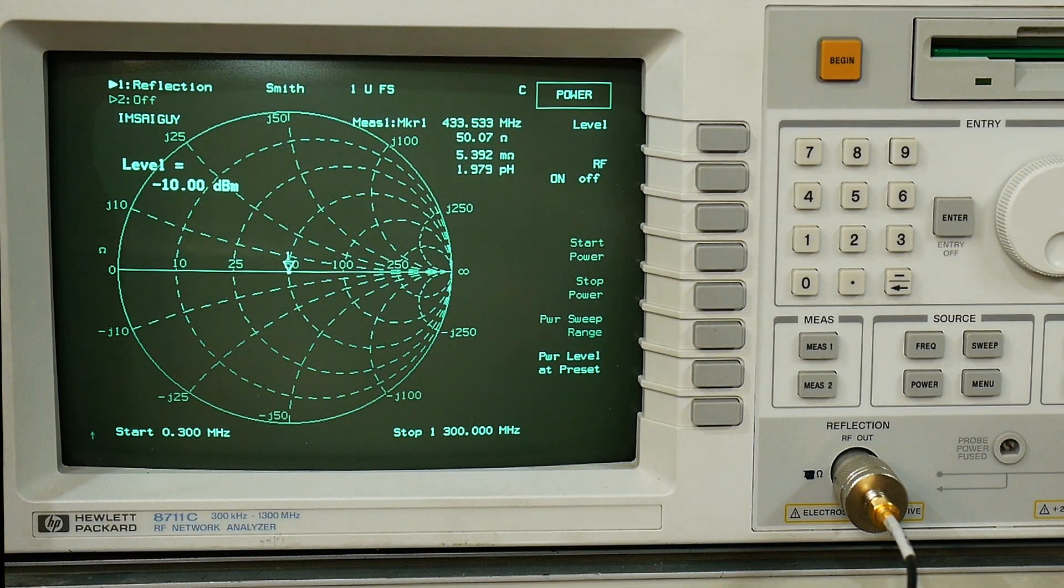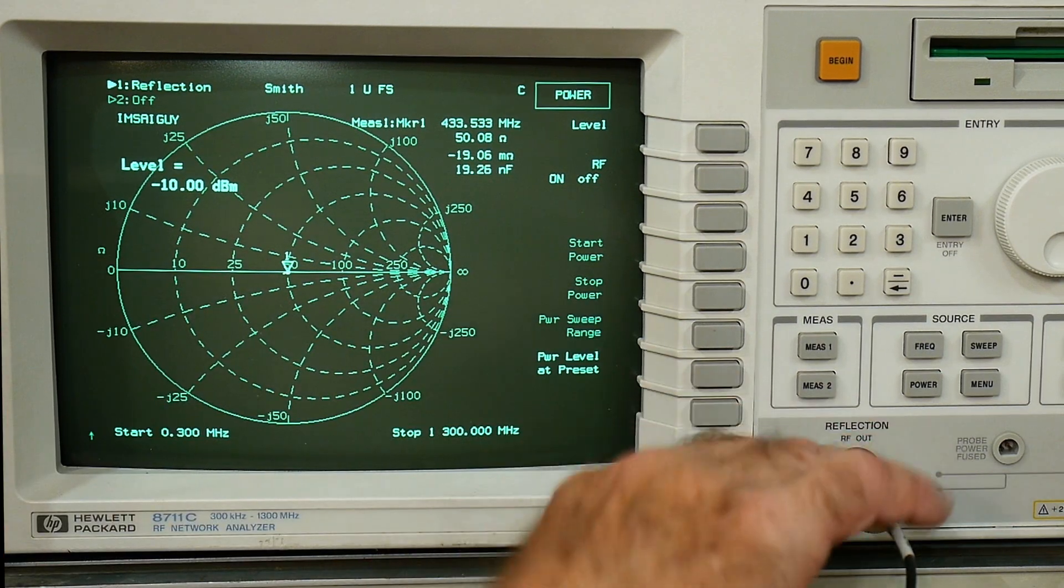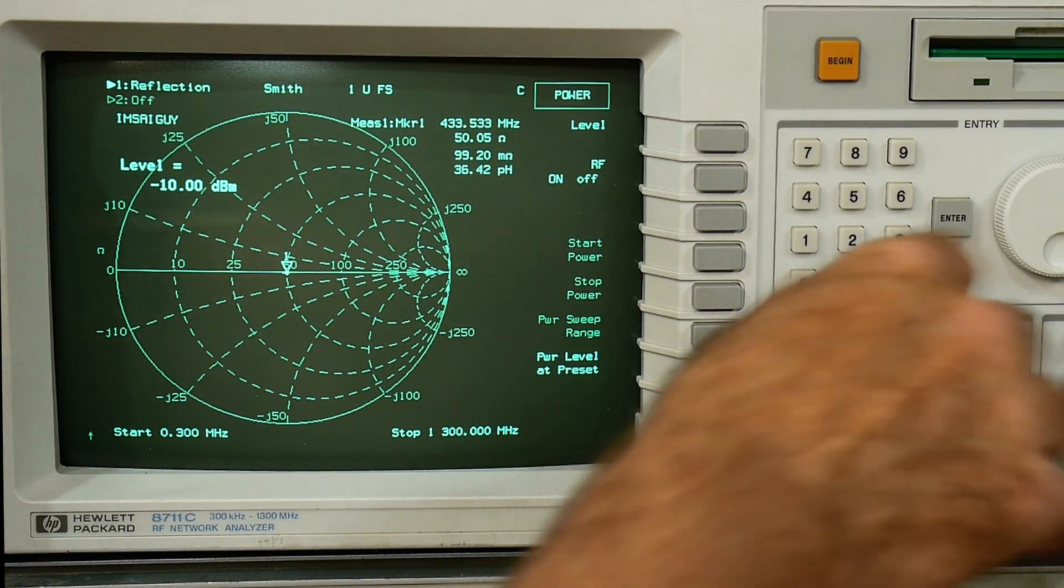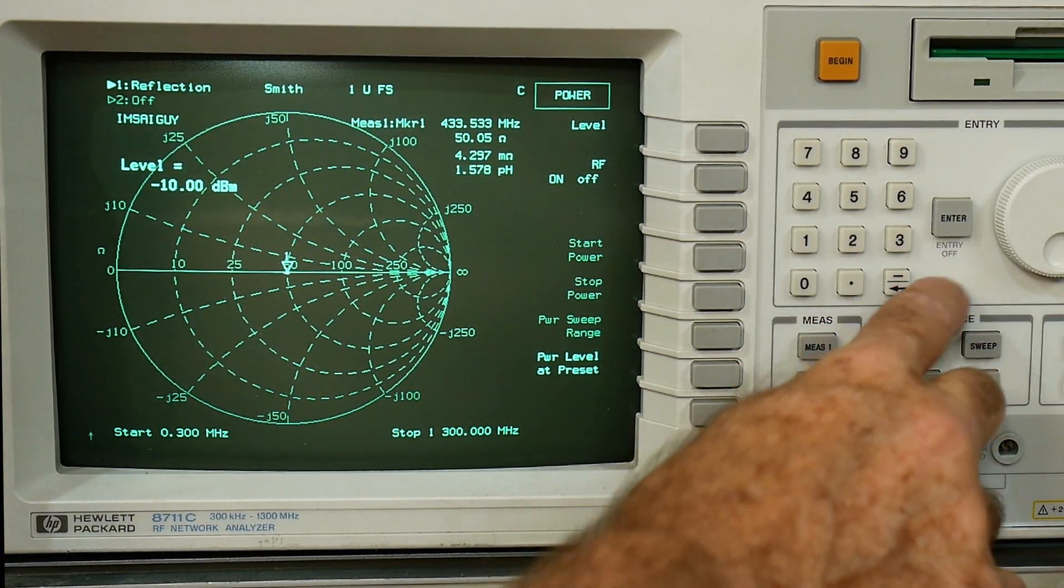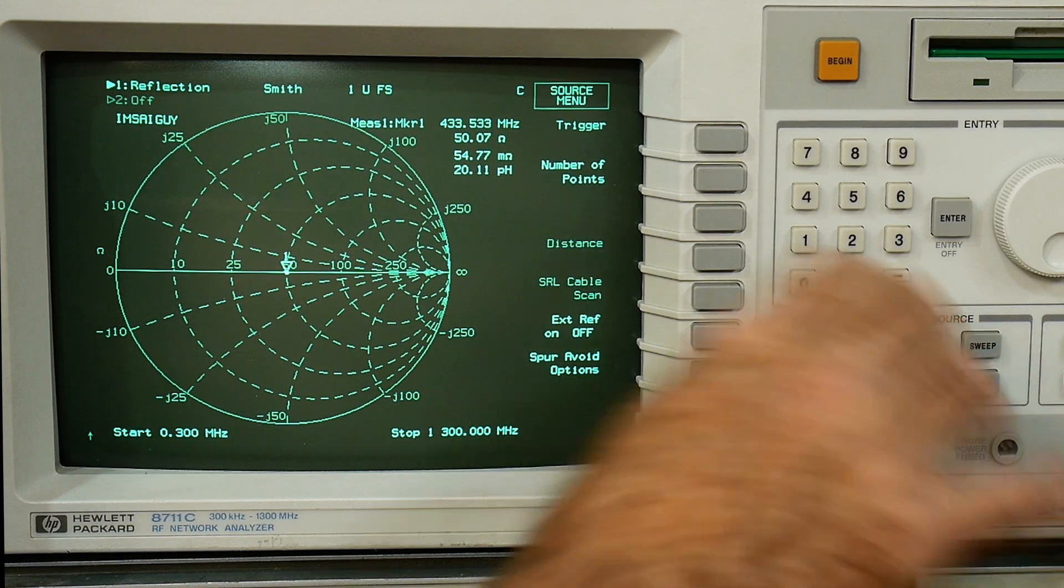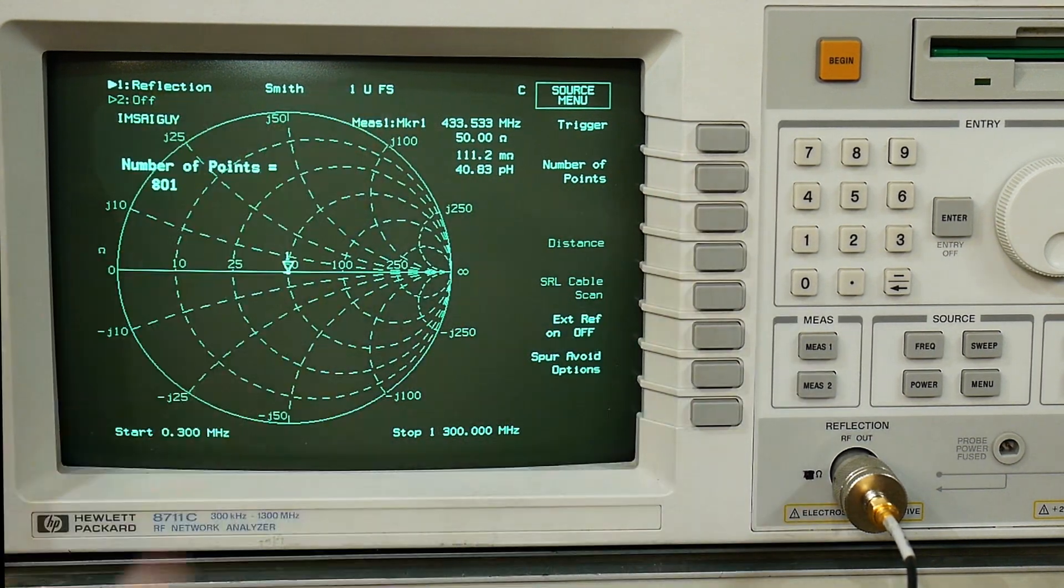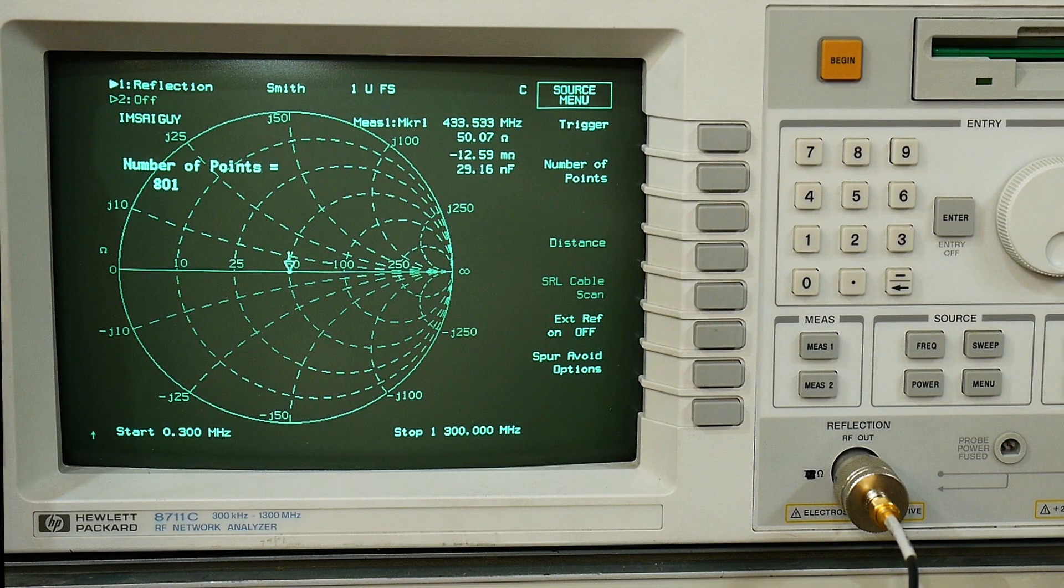We can set the power levels because it has a step attenuator. We can set the power levels to anything we want. It's set to minus 10 dBm right now, so that's what it's being output on the reflection port. We can choose how many points we want across the screen, right now it's set to 801. You can set that anywhere from 50 to 1600 so I have it set to 800.